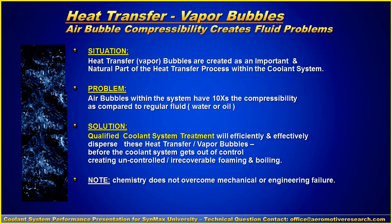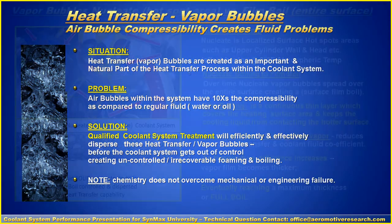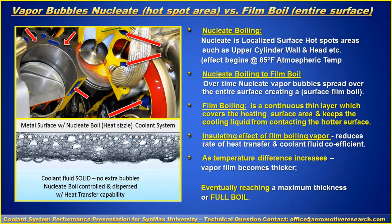Chemistry does not overcome mechanical or engineering failure. Now what's nucleate boiling? Nucleate means it's a localized surface hot spot such as the upper cylinder wall and heads, etc. And it begins about 85 degrees Fahrenheit atmospheric temperature. Now over time the nucleate vapor bubbles will spread over the entire system creating a surface film boil.